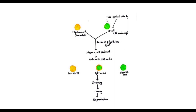The first step is immunization. We take a mouse and inject an antigen into it. When the antigen is injected, the immune system is activated. The activated immune system produces B-cells. The green circles in the diagram represent B-cells.